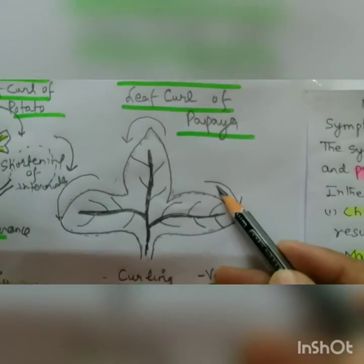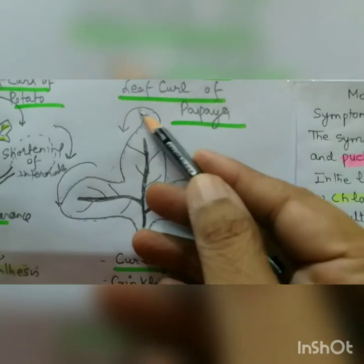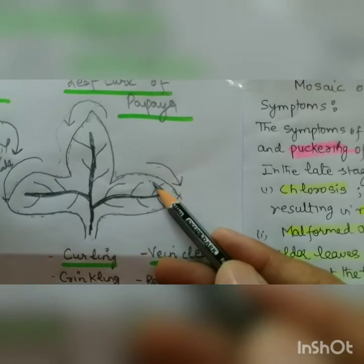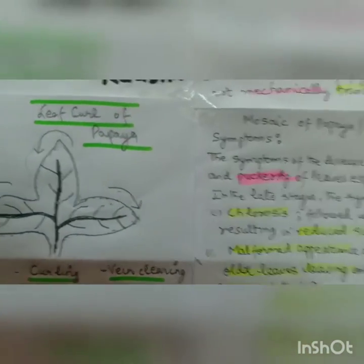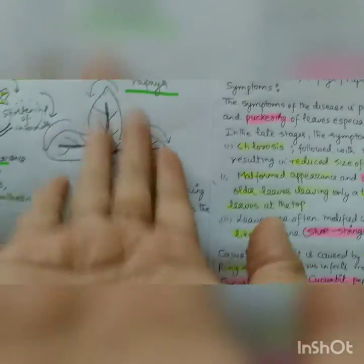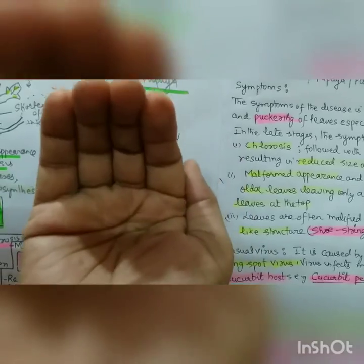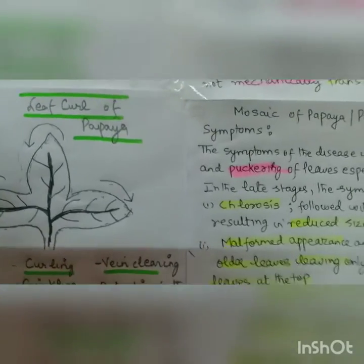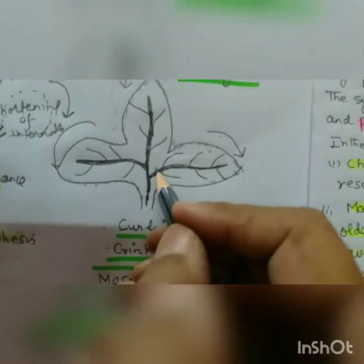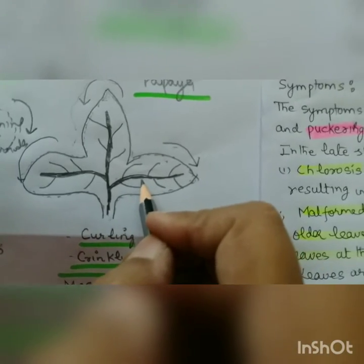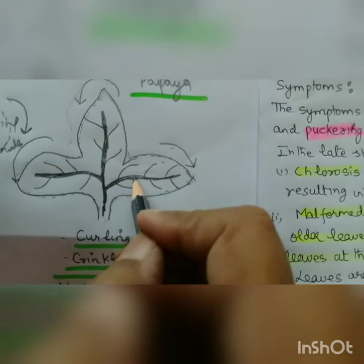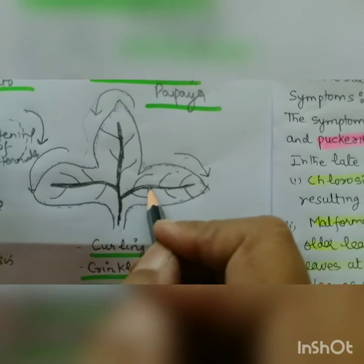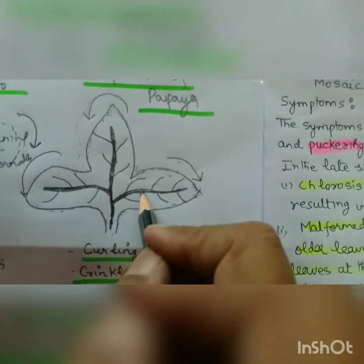The rolling of leaves is downward and inward in the form of an inverted cup. The veins start thickening and turn dark green in color. Petioles are twisted in a zigzag manner. Severely infected plants fail to flower and bear fruit.